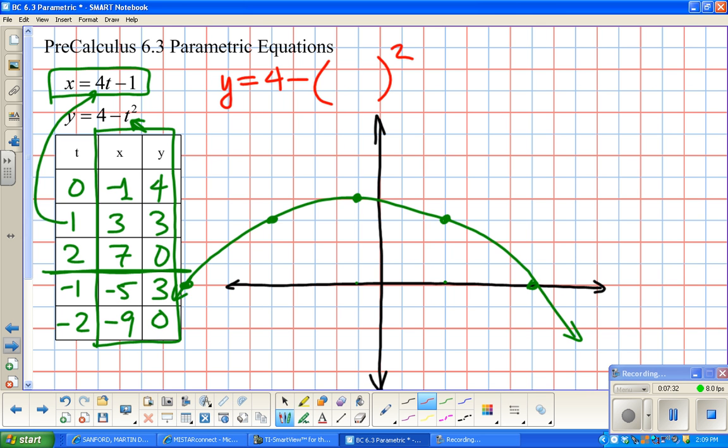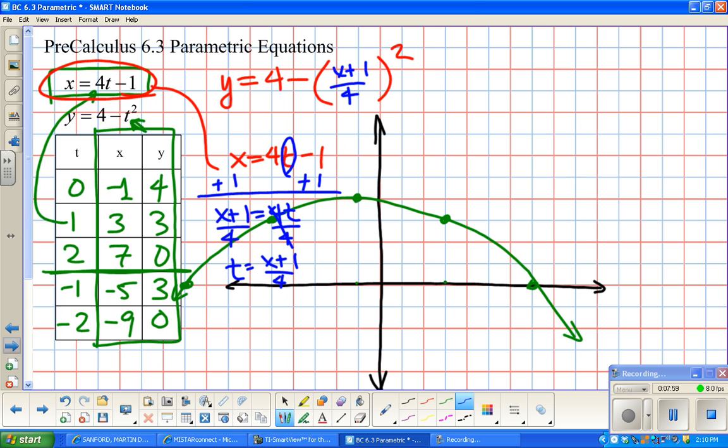Now what I want to do is write y equals 4 minus something squared. The question is, what's the something? Because I'm trying to get rid of t. Well, I need to know what t is equal to. x equals 4t minus 1. If I want to replace t, I need to make this equal to t. So I'm going to add 1 and divide both sides by 4. So t equals x plus 1 over 4.